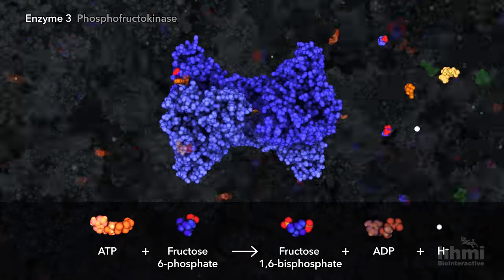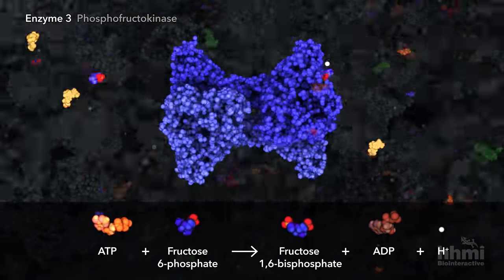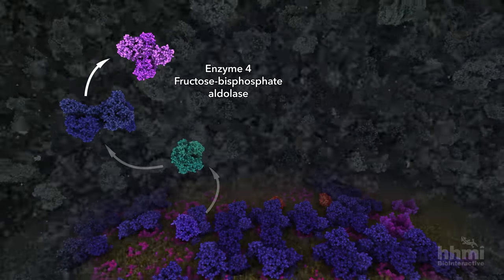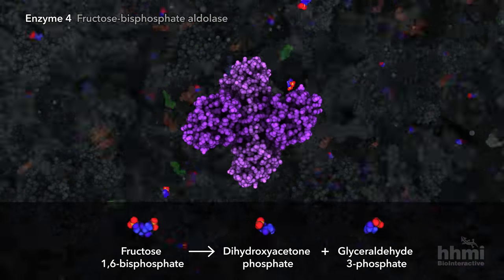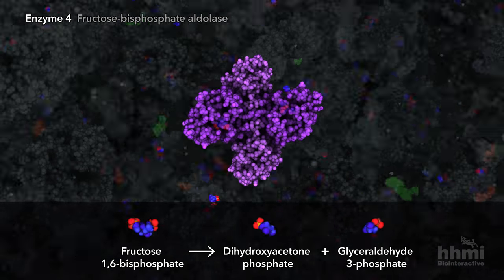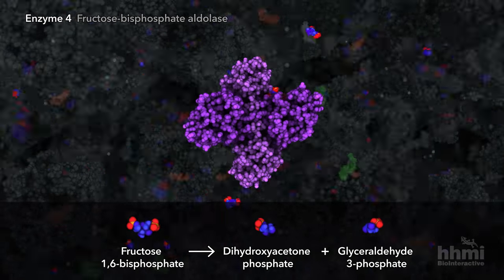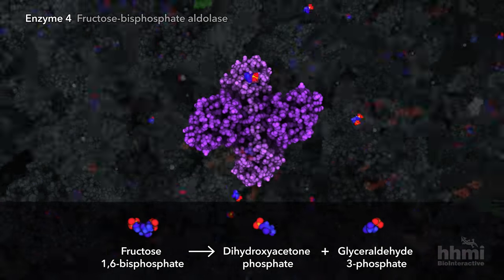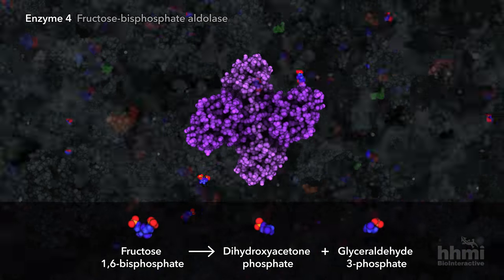The 6-carbon sugar is now ready to be broken apart. The fourth enzyme cuts the molecule in half, creating two 3-carbon sugars, each with a single phosphate attached. The sugar products are isomers of each other, but only glyceraldehyde-3-phosphate is ready to continue with glycolysis.